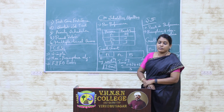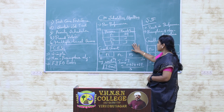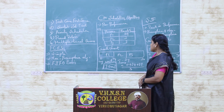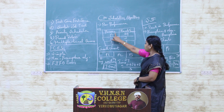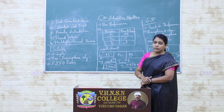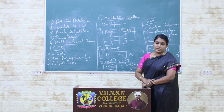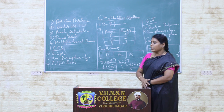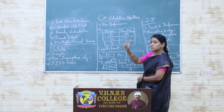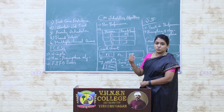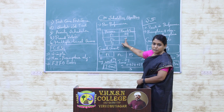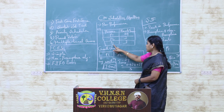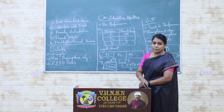Here is an example describing the implementation of the First Come First Serve algorithm. In this example, we have two columns: process and CPU burst time. We have three processes labeled P1, P2, and P3. The first process P1 has a CPU burst time of 24 milliseconds, the second process P2 has a burst time of 3 milliseconds, and the last process P3 also has a CPU burst time of 3 milliseconds.